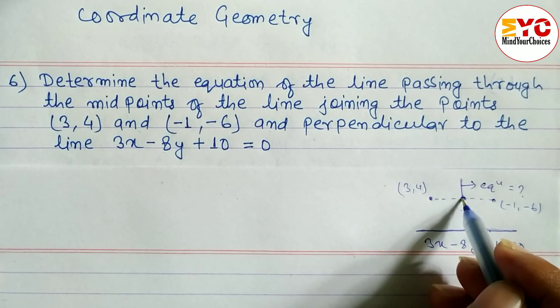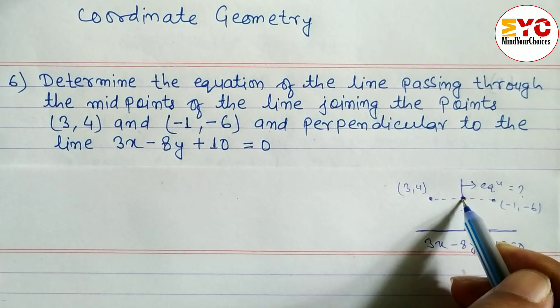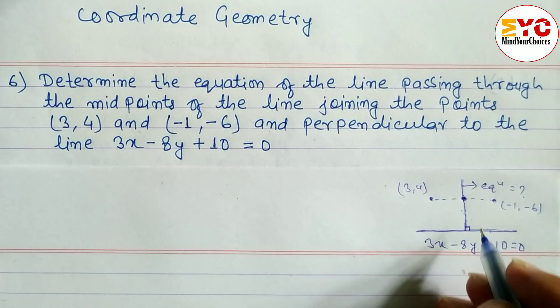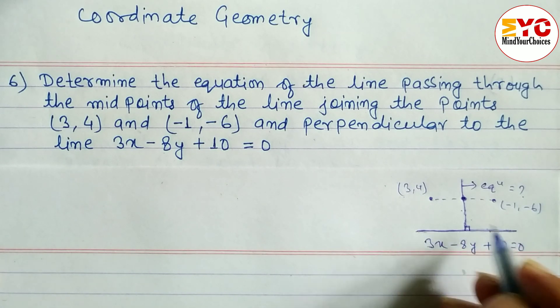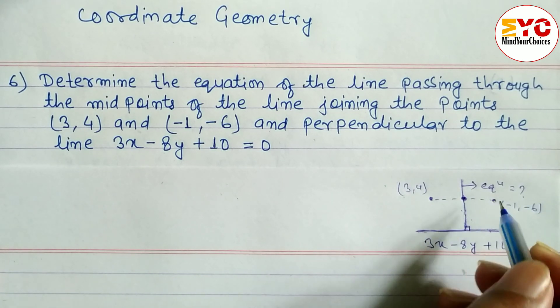First of all, we need to find one point — the midpoint — and then find the slope. Once we have both, we can get the equation of the line. So let's find the slope of the given line and the midpoint of the line joining the two points.